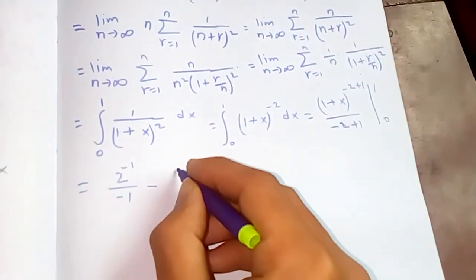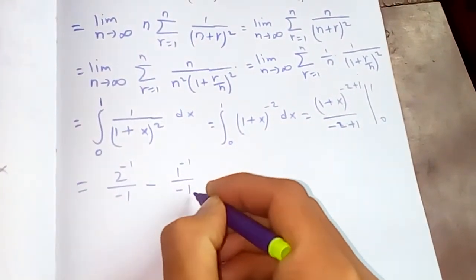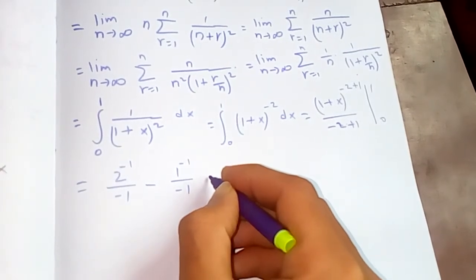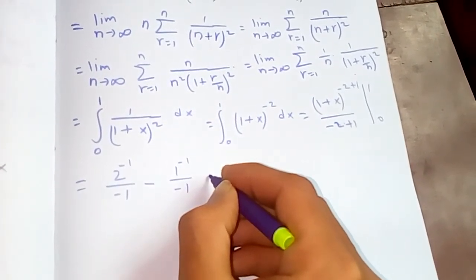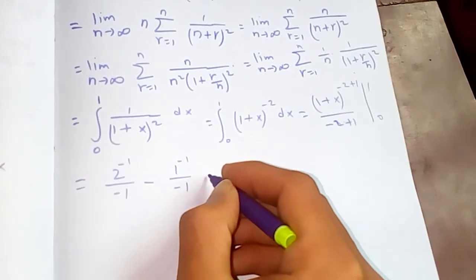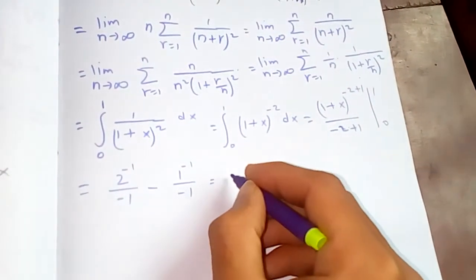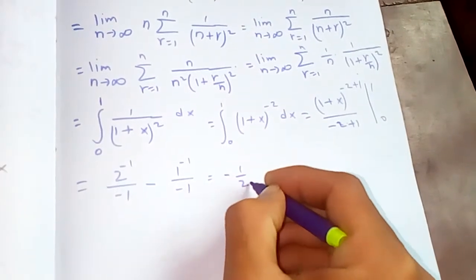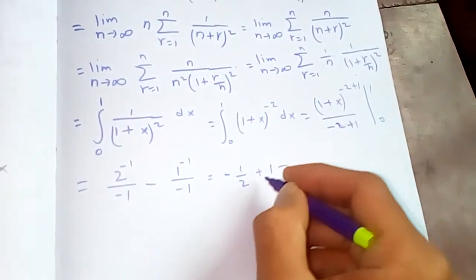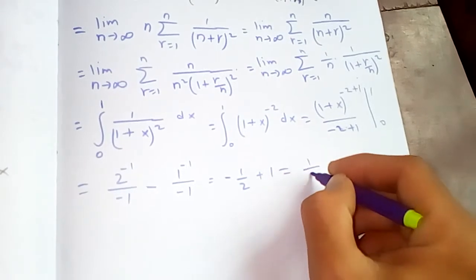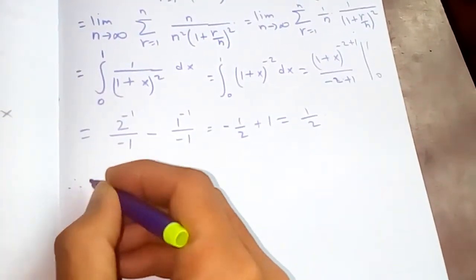Minus: plugging in zero, you get one to the power minus one over minus one. This is nothing but minus one half, plus one. So the result is one minus one half, which equals one half. This is our answer.